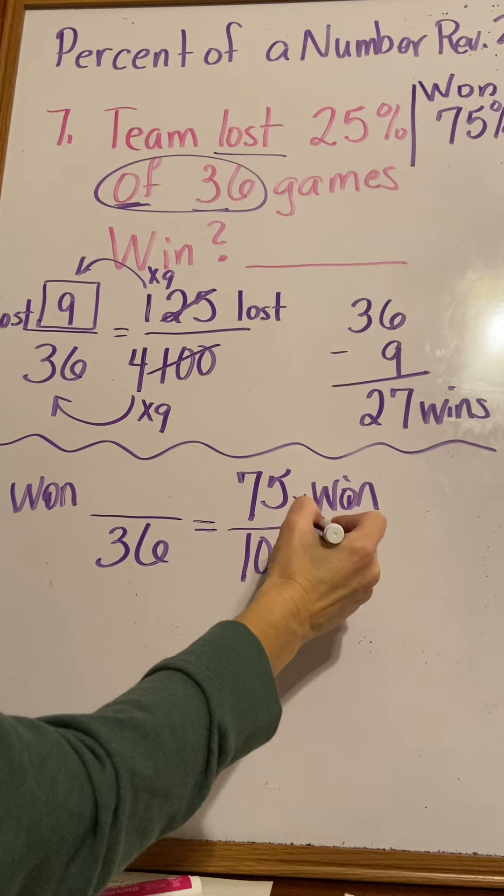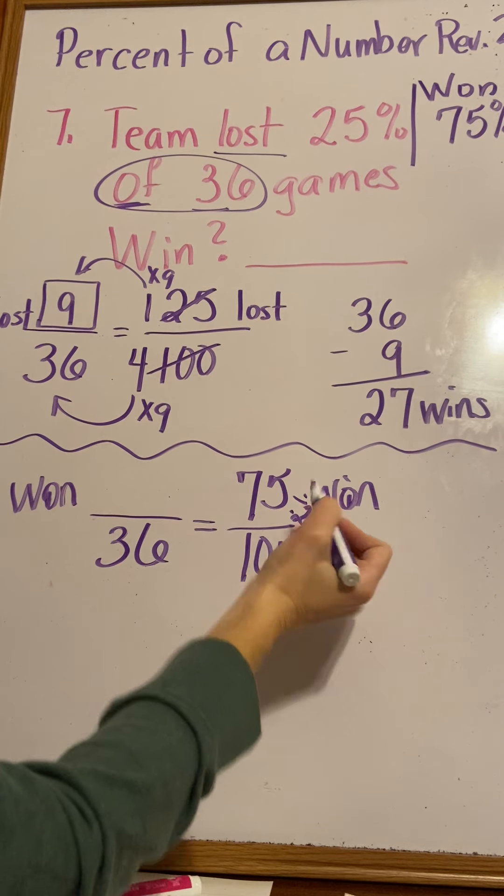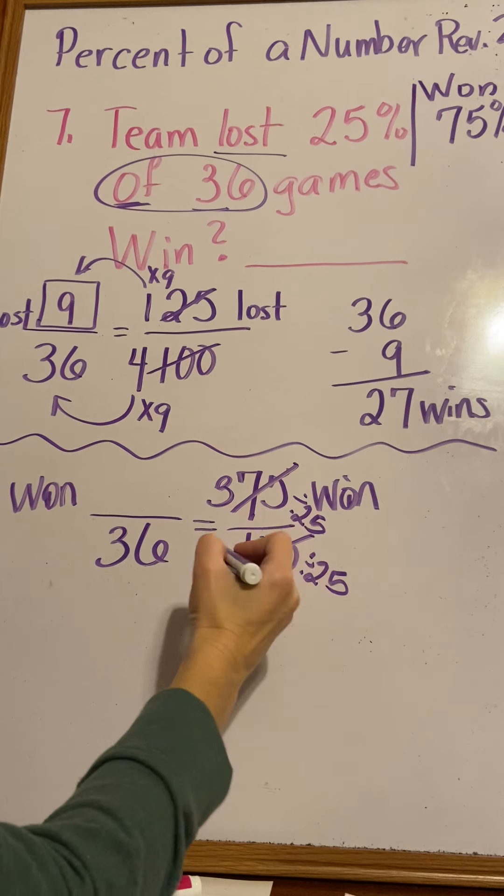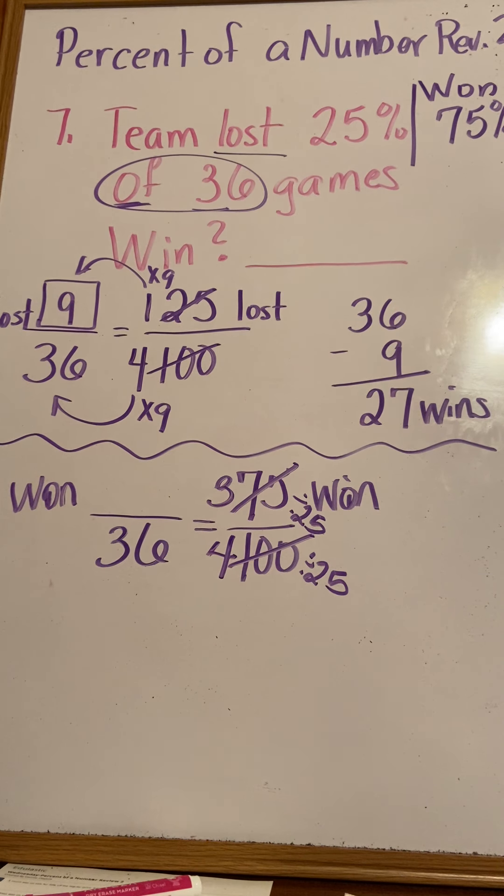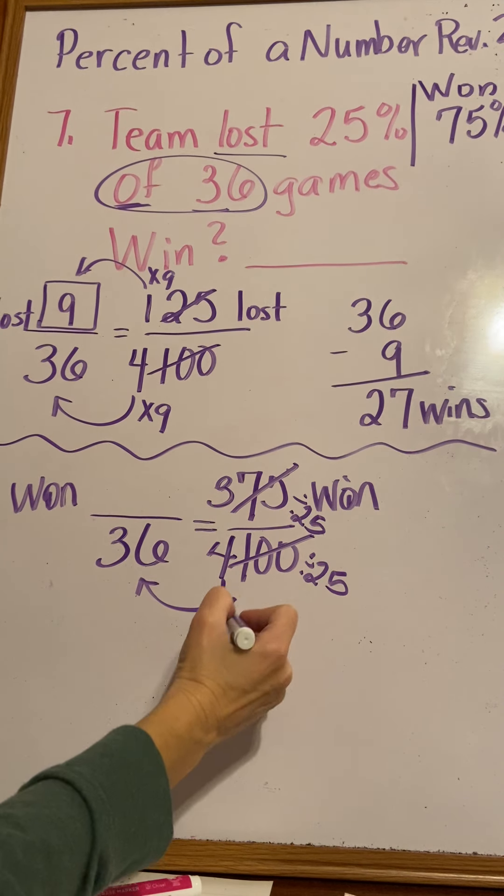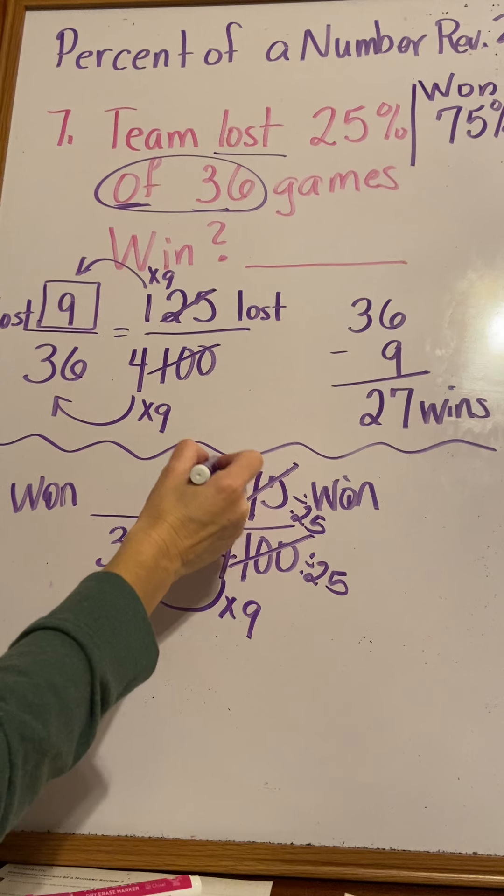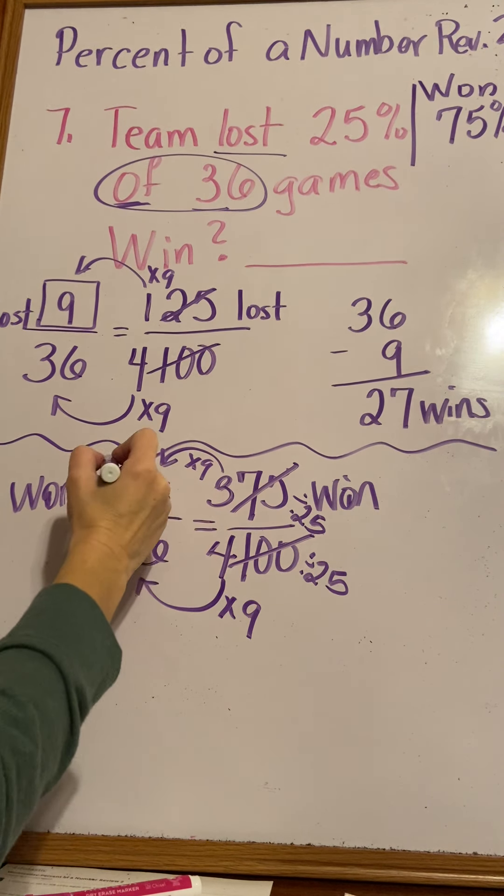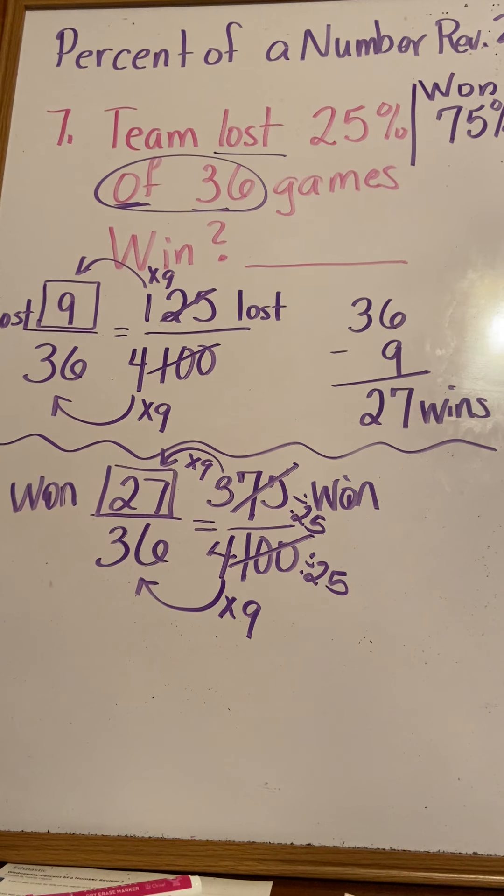Both of these will divide by 25. 75 divided by 25 is 3, and 100 divided by 25 is 4. 4 times 9 equals 36, and 3 times 9 equals 27. So they won 27 games.